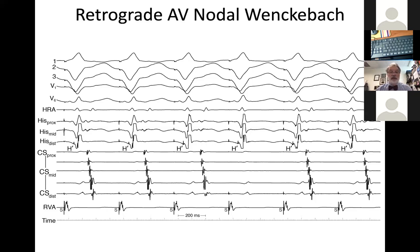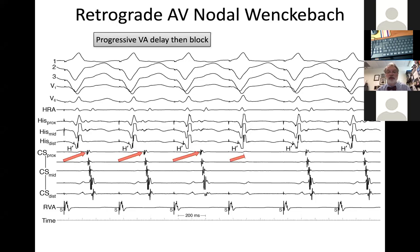Here's an example of retrograde AV nodal Wenckebach. We have a retrograde His on each complex. The absence of As on every beat says we're blocking retrogradely, and since we got to the His, the block must be in the AV node. The stim-to-A interval gradually prolongs until it fails, then the cycle repeats with a shorter then gradually longer VA interval. We should all be accustomed to recognizing that pattern.